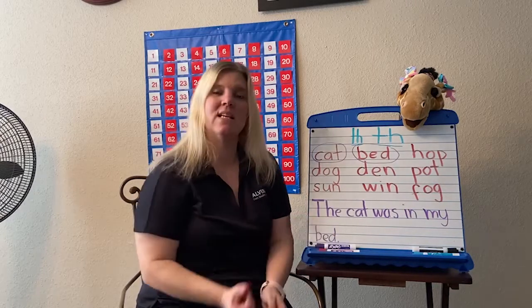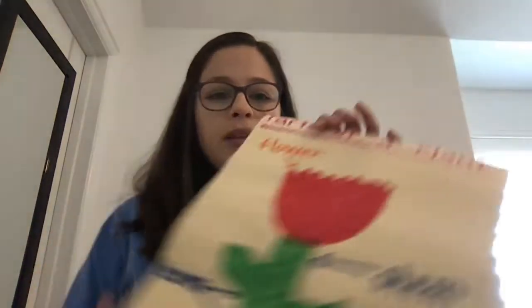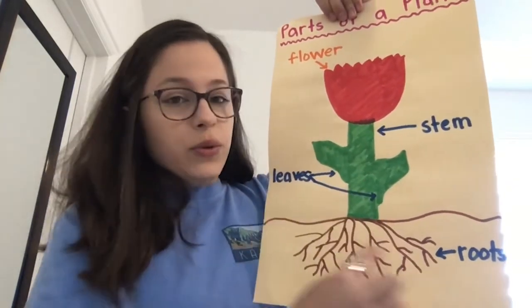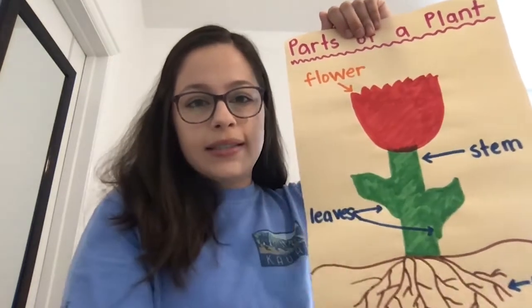Hi boys and girls, this is Mrs. Trunk bringing you another science lesson. I hope you had a great week and enjoyed all the fun activities the kindergarten teachers put together for you to practice your learning while at home. Last week we talked about the parts of a plant — the three main parts are the stem, the leaves, the roots, and then the flower, which is optional and not seen on all plants.